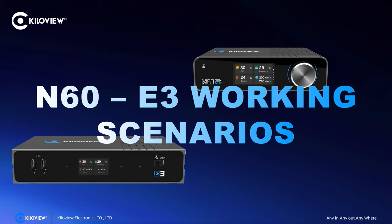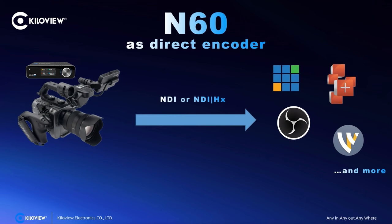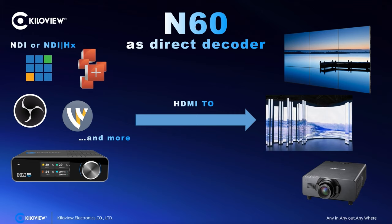Let's have a look at some N60 and E3 working scenarios. The N60 can be used in direct encoder mode — you place it on a camera and send NDI or NDI-HX directly to your software video mixer of choice, such as vMix, VectorPlus, OBS, Wirecast, and many more. You can also use it as a decoder: with the N60 you can use the HDMI output to stream NDI feeds back to video walls, monitors, LED walls, and projectors.